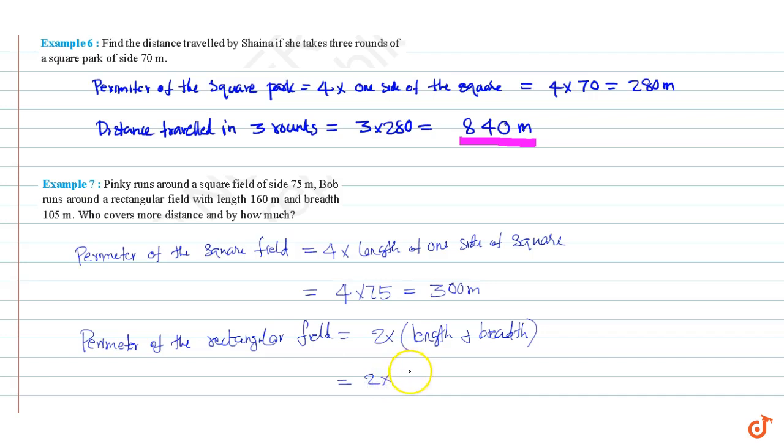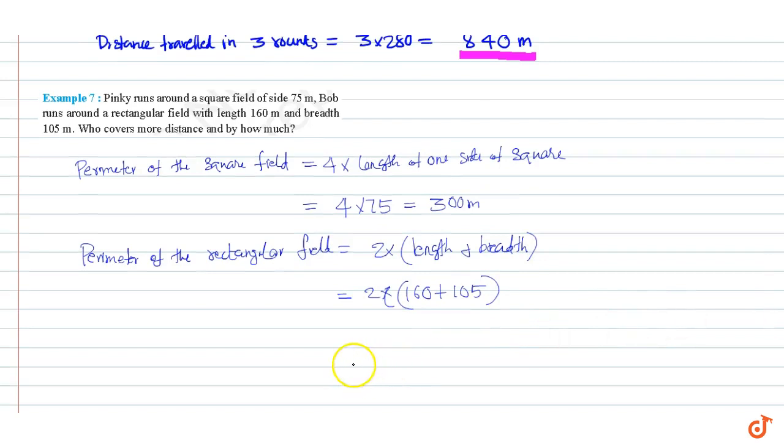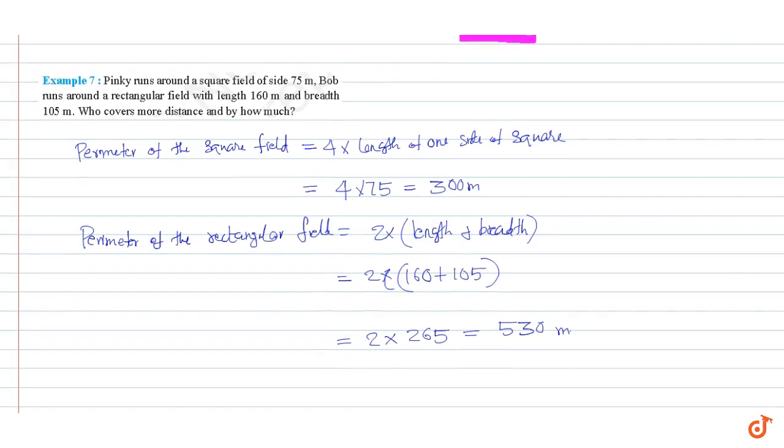(160 + 105), which equals 2 × 265, which equals 530 meters. Therefore Bob covers more distance, and the difference is